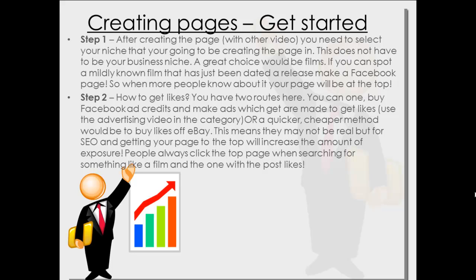So you've bought that first 5,000 or 10,000 likes — however much it takes. It'll be at the top, and people always click at the top when searching for a film. You know, you wouldn't type in the new James Bond movie and then click five results down — you'd click the first one.